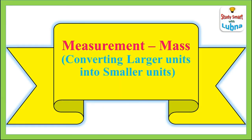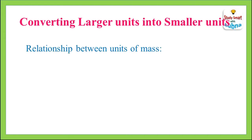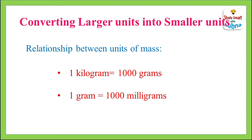Welcome students. Today we are going to learn how to convert larger units of mass into smaller units. First of all, we are going to discuss the relationship between units of mass. 1 kilogram is equal to 1,000 grams, and 1 gram is equal to 1,000 milligrams.